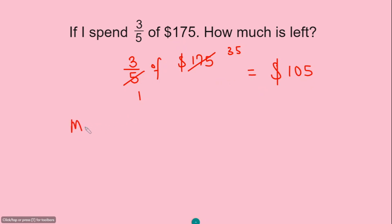So amount of money left, it's gonna be $175 subtract $105. And if I do the subtraction, I'm gonna have $70. So this represents the amount of money left after I have spent this. I hope you enjoyed this video.